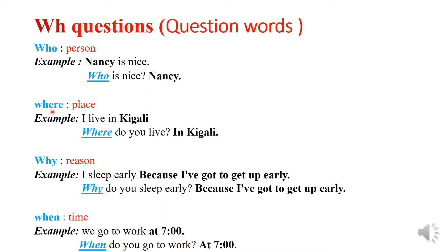We have 'where' for place. The answer must be a place. Example: I live in Chigari. You see, Chigari is the capital city of Guanda — it is a place. Where do you live? In Chigari.